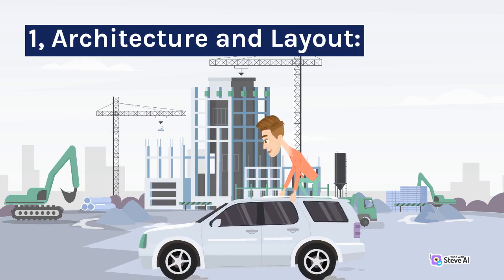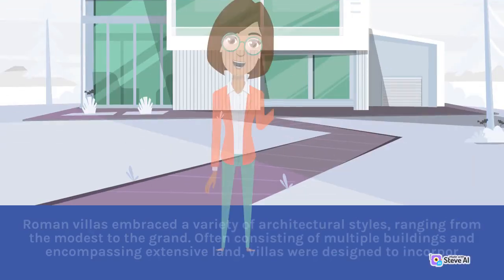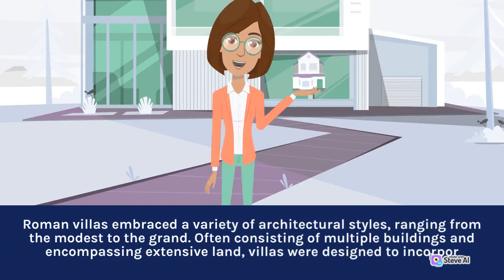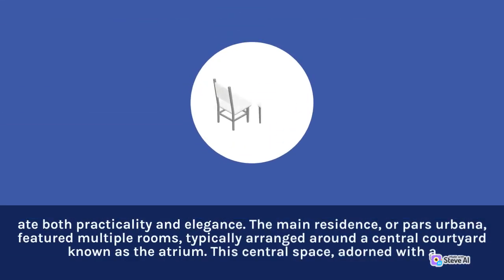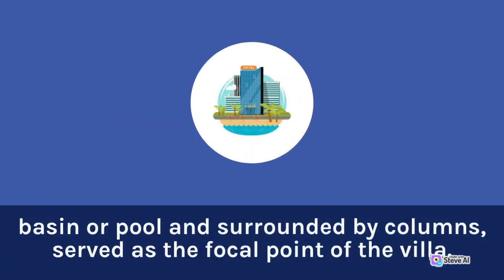1. Architecture and Layout. Roman villas embraced a variety of architectural styles, ranging from the modest to the grand. Often consisting of multiple buildings and encompassing extensive land, villas were designed to incorporate both practicality and elegance. The main residence, or pars urbana, featured multiple rooms, typically arranged around a central courtyard known as the atrium. This central space, adorned with a basin or pool and surrounded by columns, served as the focal point of the villa.